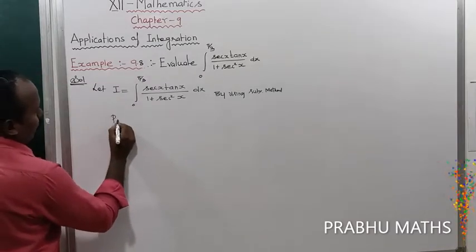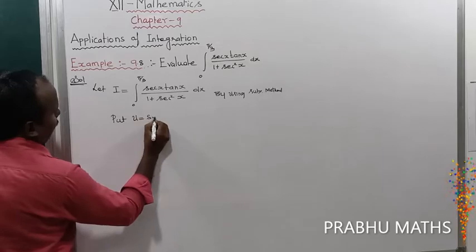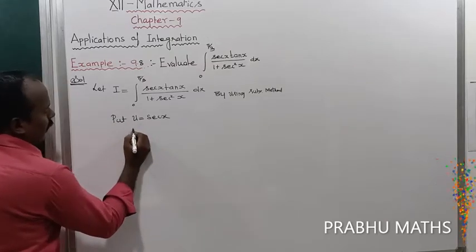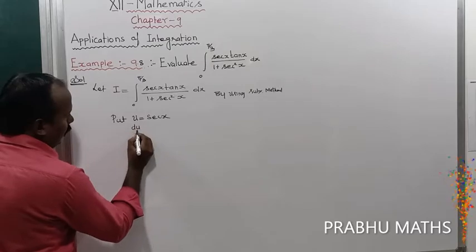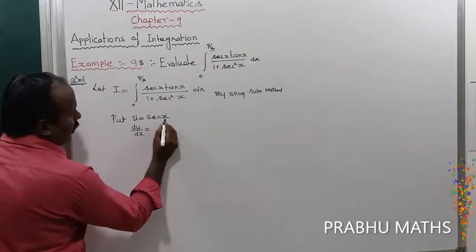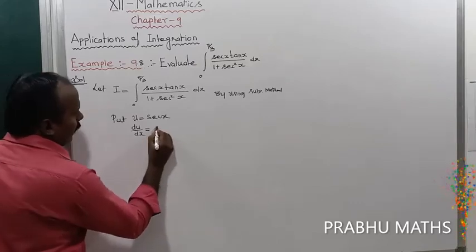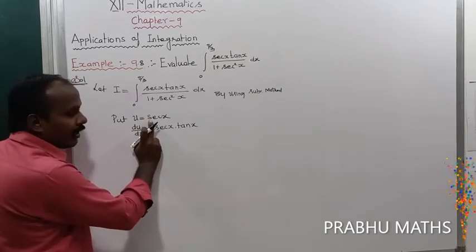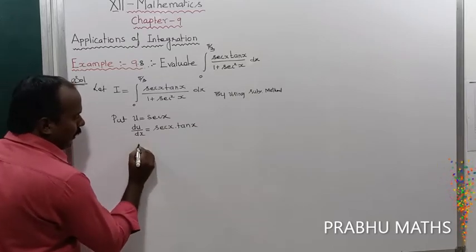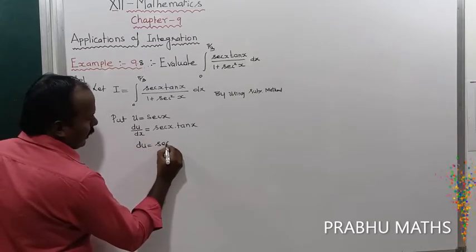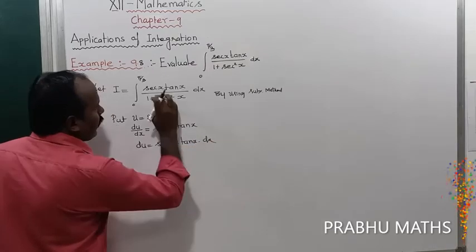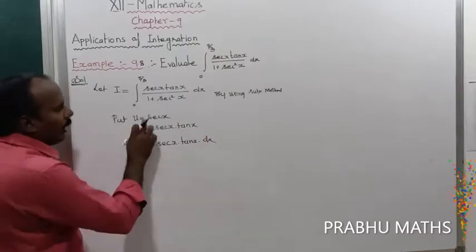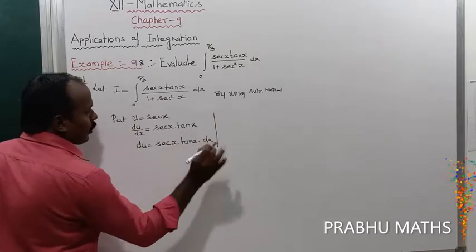By using the substitution method, let u equal to sec x. Differentiating with respect to x: du/dx equals sec x tan x, since the differentiation of sec x equals sec x tan x. Moving dx to the right side: du equals sec x tan x dx. So the numerator sec x tan x dx is fully replaced by du, and the denominator is replaced by 1 plus u squared.